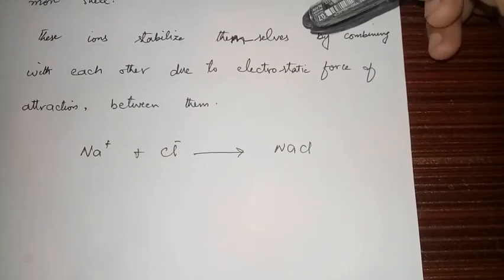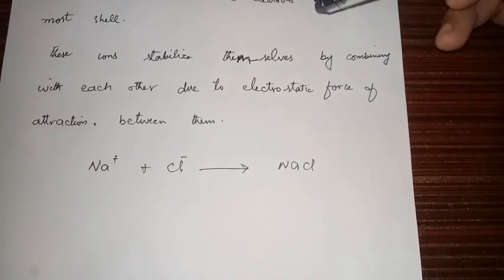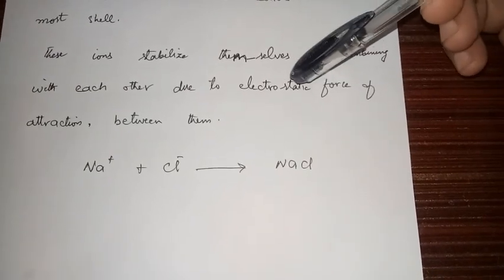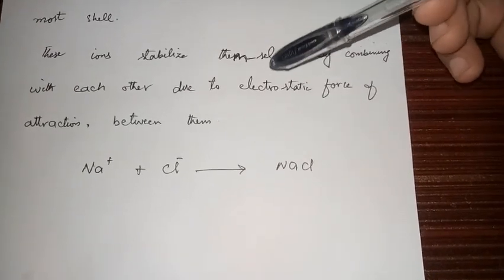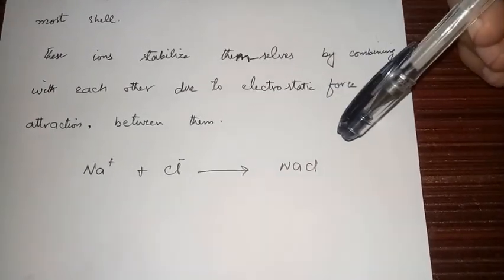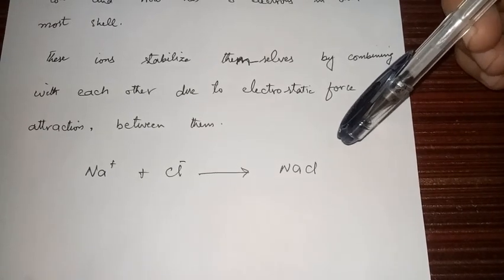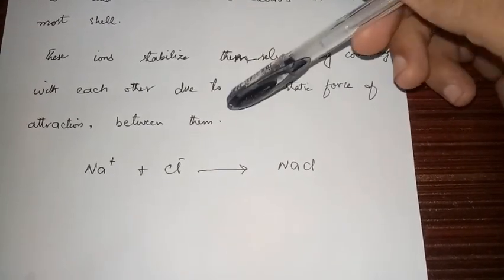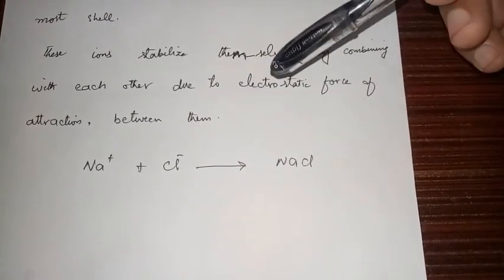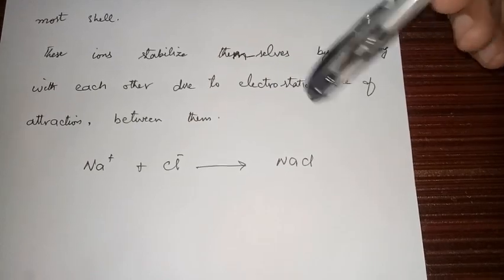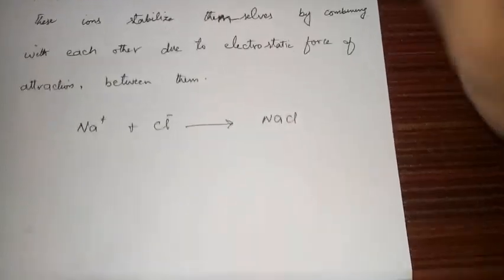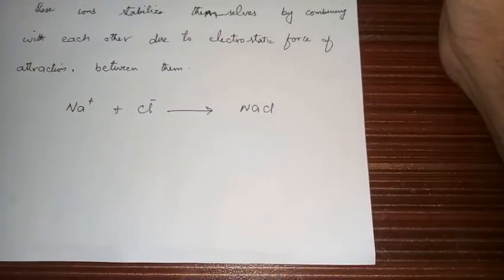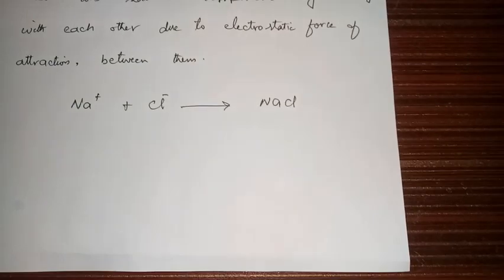The force of attraction between positively and negatively charged ions is known as the electrostatic force of attraction. The ions stabilize themselves by combining through this electrostatic force of attraction, and usually energy is released in this type of bond formation.